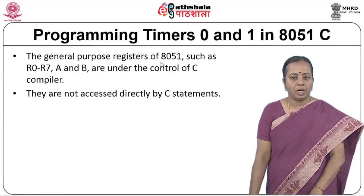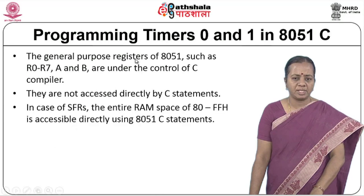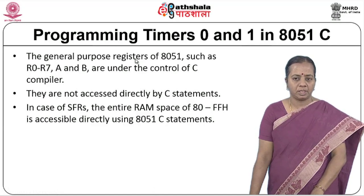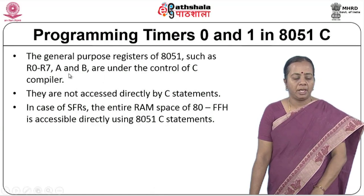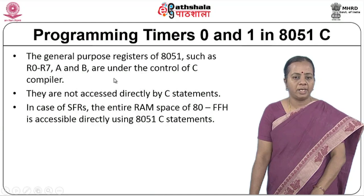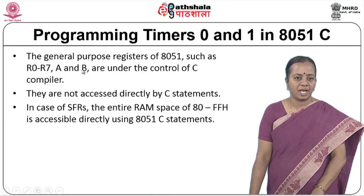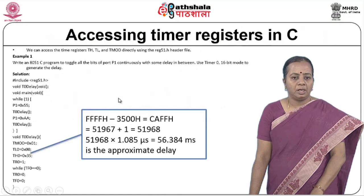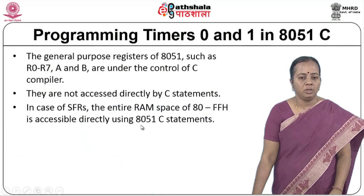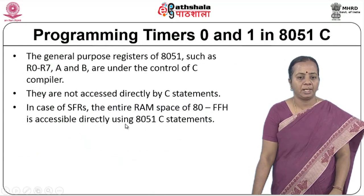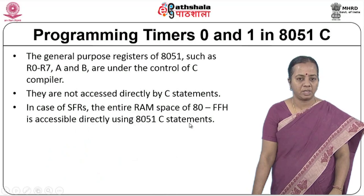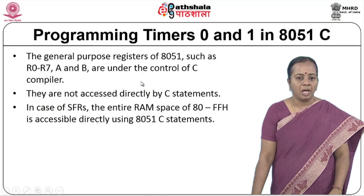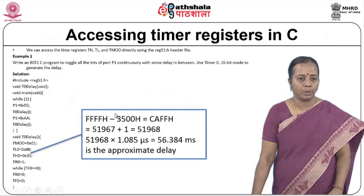When writing code for timer 0 and timer 1 in 8051, all these basics must be understood before writing 8051 embedded C code. In embedded C, general purpose registers such as accumulator A, register B, and R0 to R7 are under the control of the C compiler — you cannot access them directly. The SFR space (RAM space) is accessible directly using 8051 C statements. It is like writing code in a high-level language for the 8051.